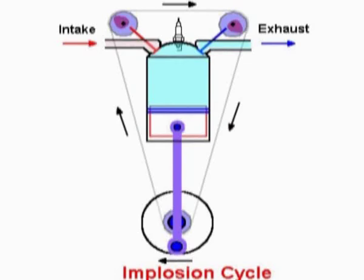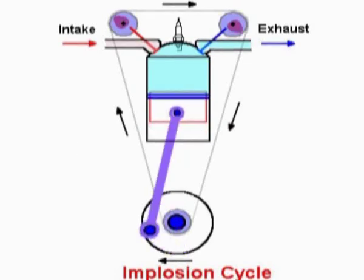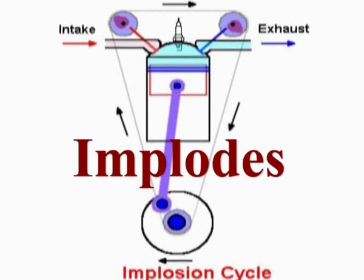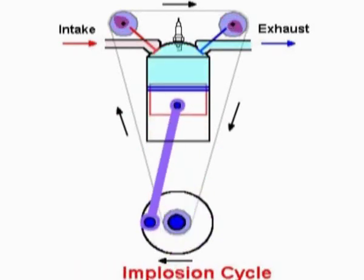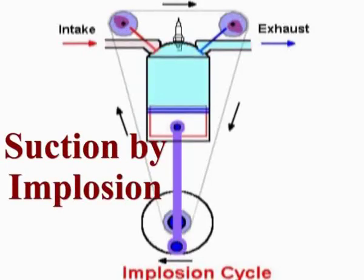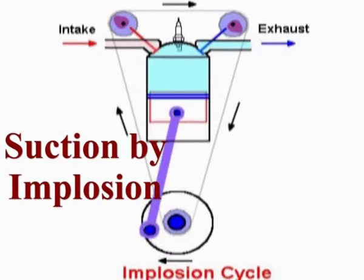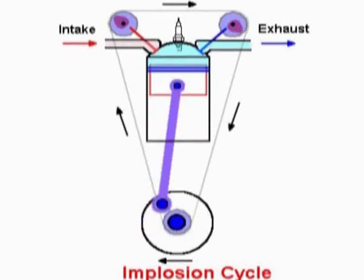When HHO is ignited in a vacuum, it doesn't expand. It contracts. It implodes, which means the HHO converts back to water when it's ignited. And so the piston needs to be sucked to where it is going. That is the motivating force, is suction, a vacuum.